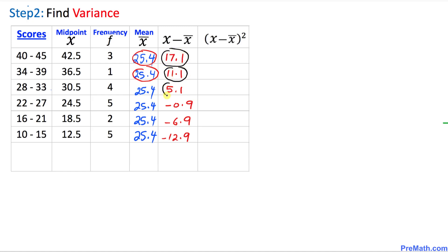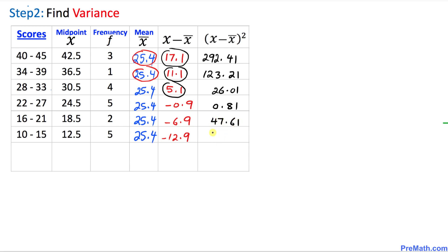In the next column we square those differences. Squaring each value gives us: 292.41, 123.21, 26.01, 0.81, 47.61, and finally 166.41.